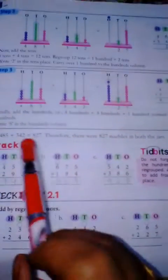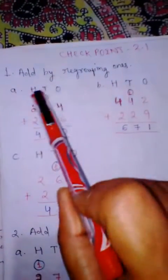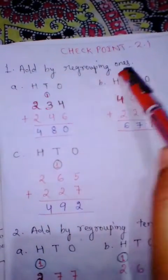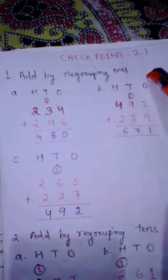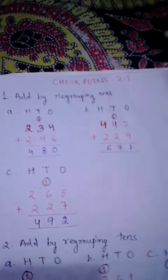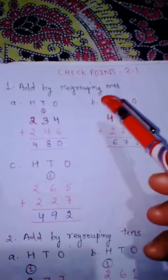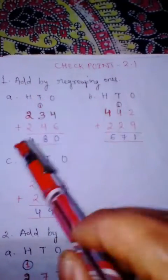So checkpoint 2.1. See question number 1 of your checkpoint 2.1. Question number 1: add by regrouping ones. So we have to add by regrouping ones.